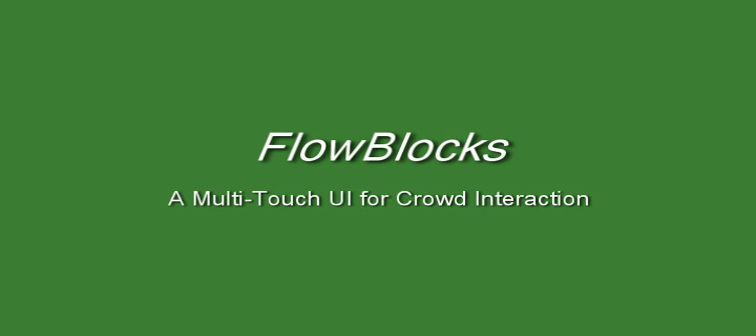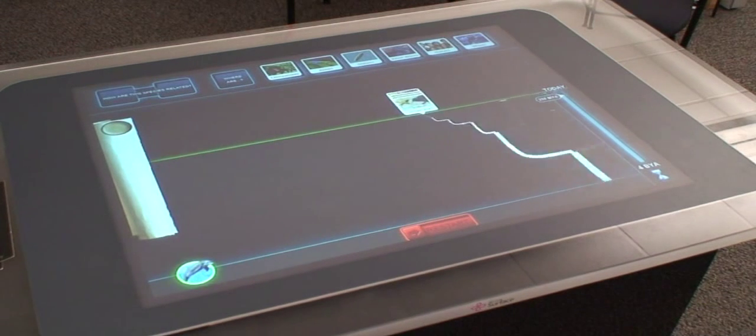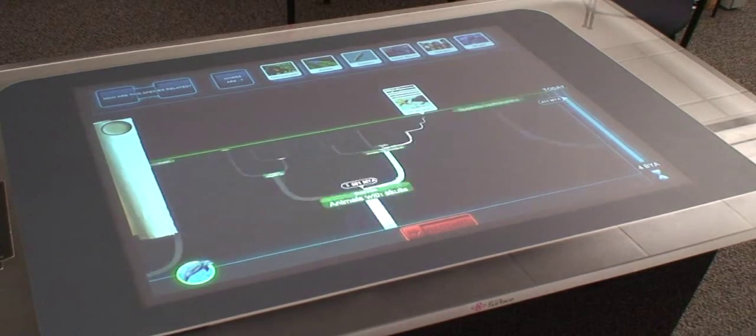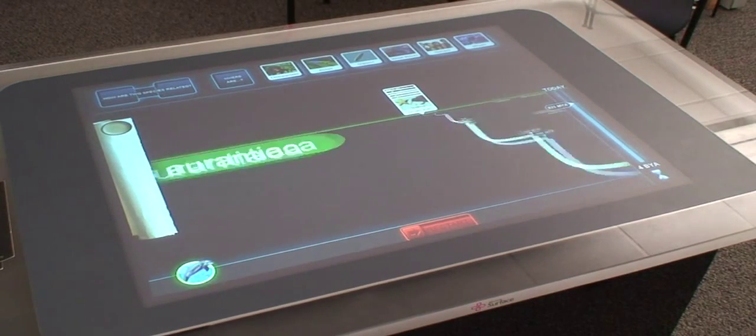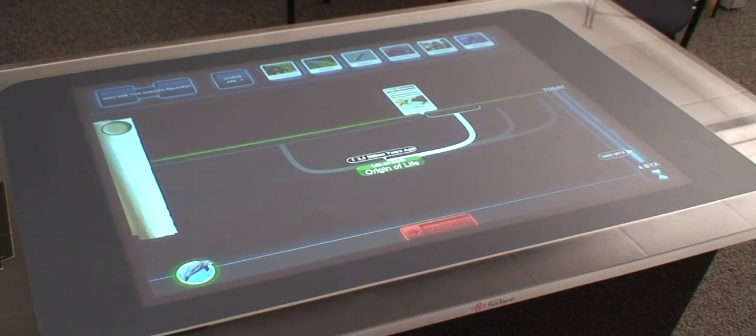Introducing Flowblocks, a novel UI for crowd interaction. The Flowblocks UI has been developed for an exhibit across a year of rapid iterative testing and evaluation in our partner museum. We will describe the application's functionality as we illustrate the core components of Flowblocks.